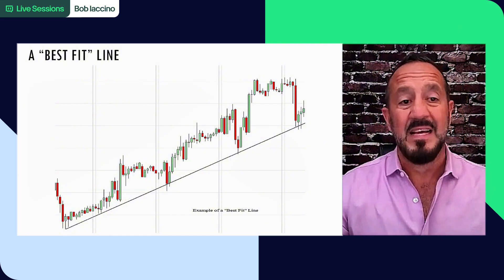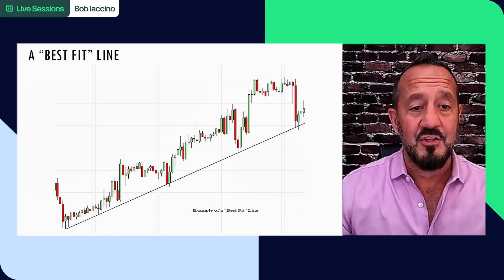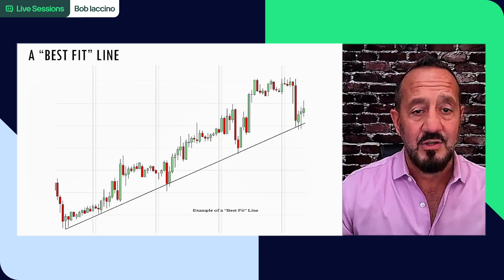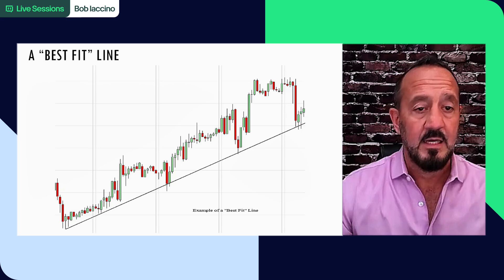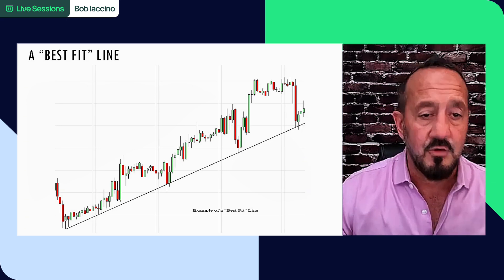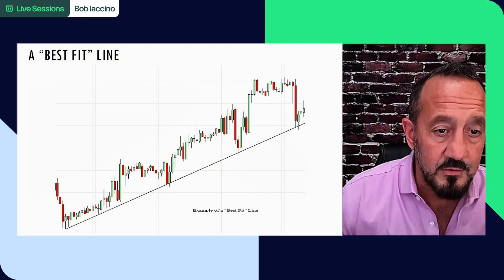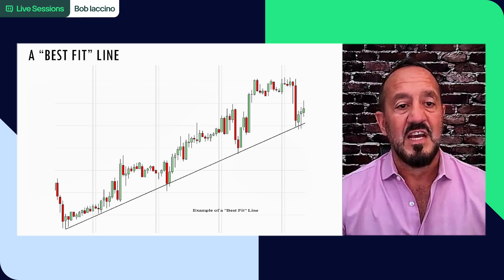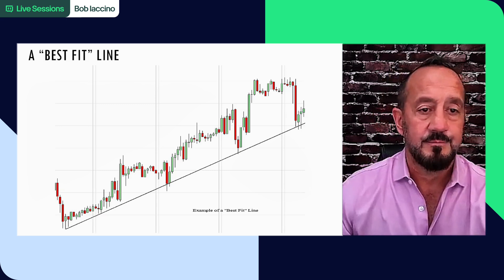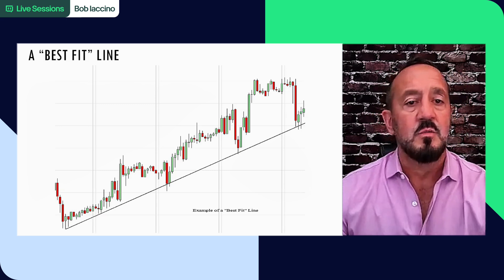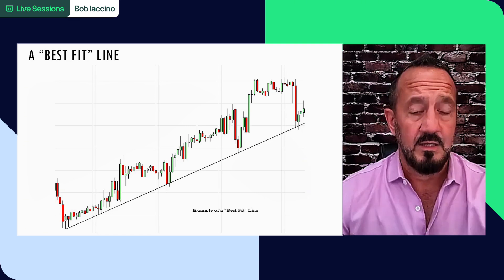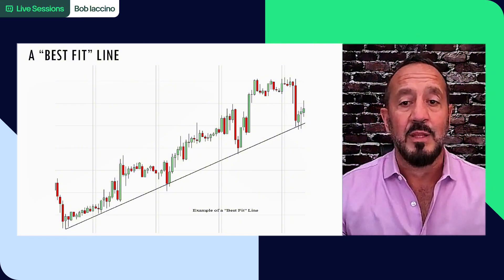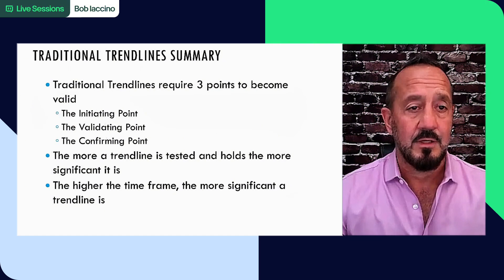Here's the example of a best fit trend line. You have an initiating point, then a little bit of a break, then a confirmation - it's got a slight break in it, then you've got more breaks. This is more of a best fit trend line. This trend line is not following the rules of traditionally taught trend lines.